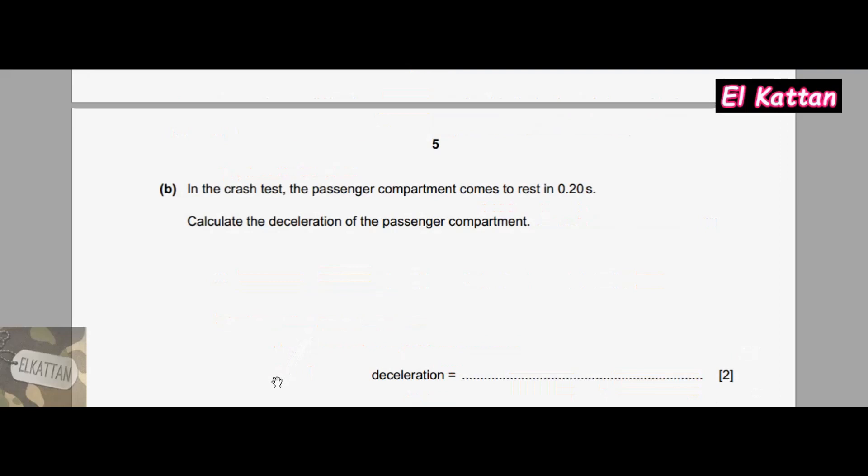For part B, in the crash test, the passenger compartment comes to rest in 0.20 seconds. Calculate the deceleration of the passenger compartment. We highlight key words: rest, 0.20 seconds as the time taken, calculate, and deceleration.